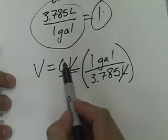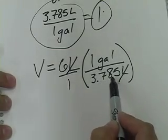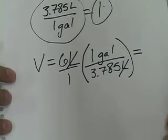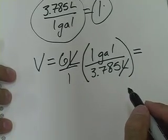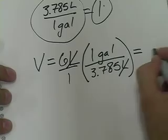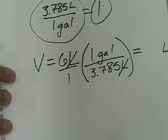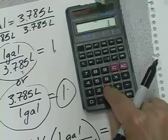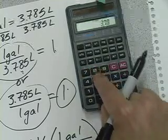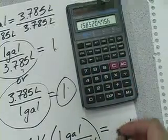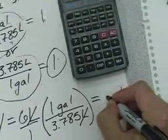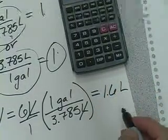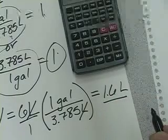So once we crunch our numbers, divide 6 by 3.785, we have now converted from liters to gallons. And whatever that would be. So we get 1.6 gallons. Here's your answer.